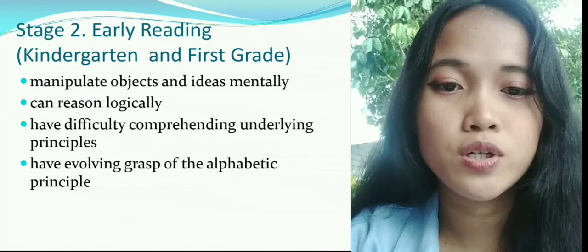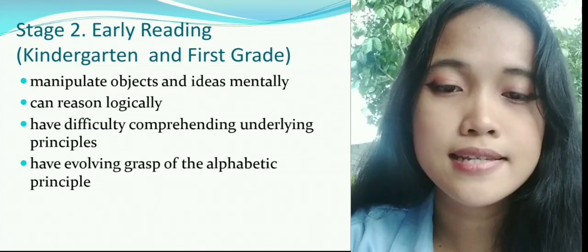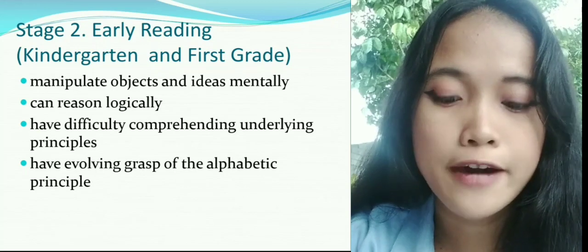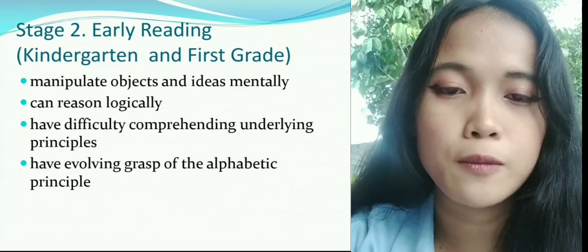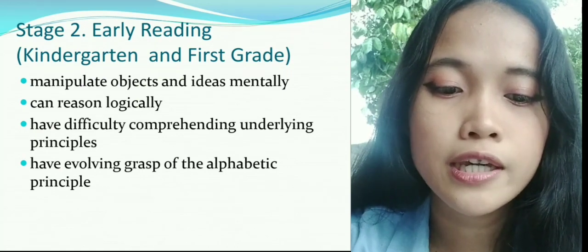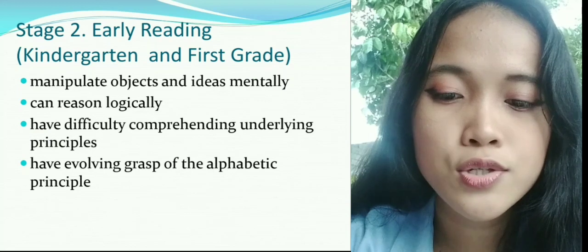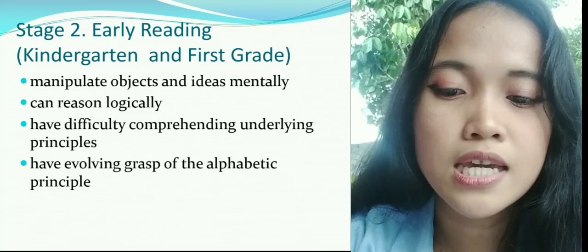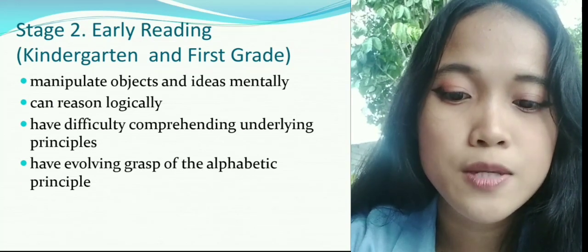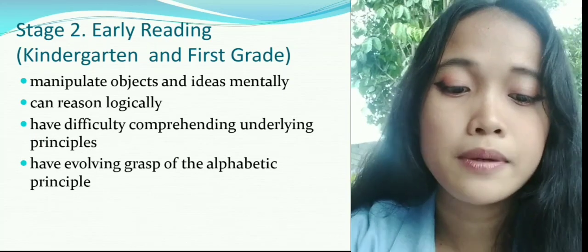Good day everyone. I am Julie Jean B. Salomon and I am the next reporter. My assigned task is to discuss stages 2, 3, 4, and 5 in the stages of reading development. Stage 2: Early Reading, Kindergarten and First Grade. The description of this stage is that children can manipulate objects and ideas mentally, can reason logically, have difficulty comprehending underlying principles, and have an evolving grasp of the alphabetic principle.